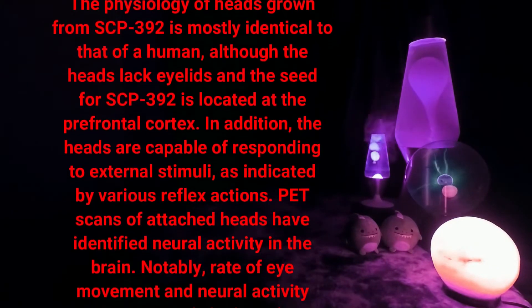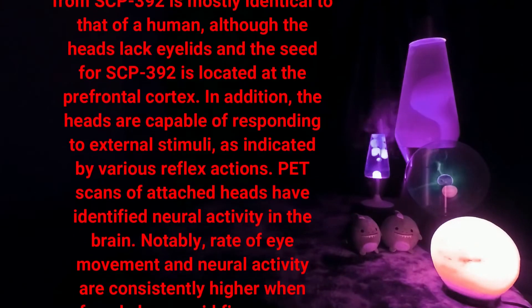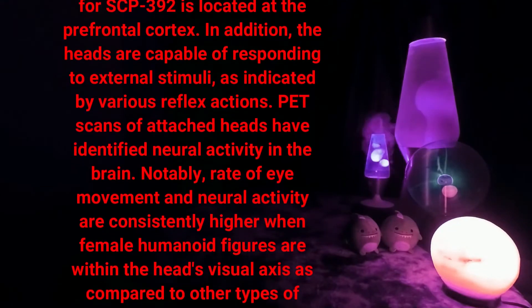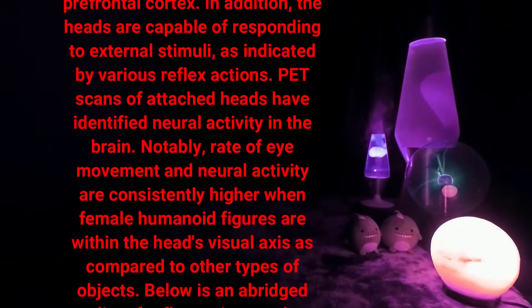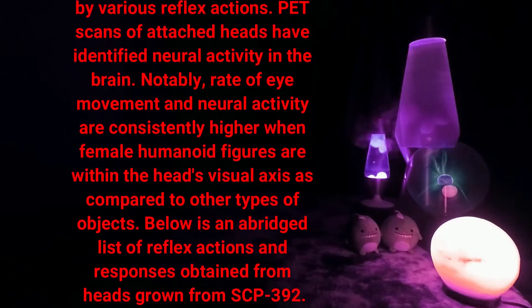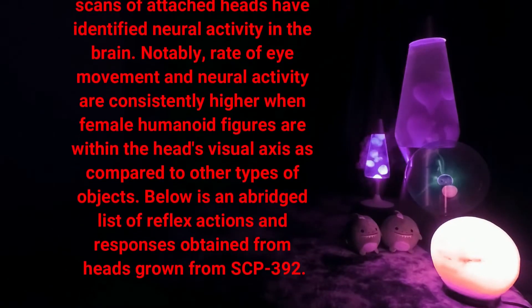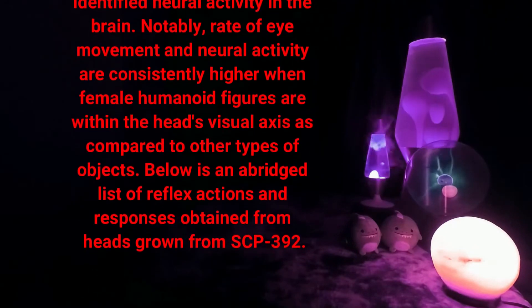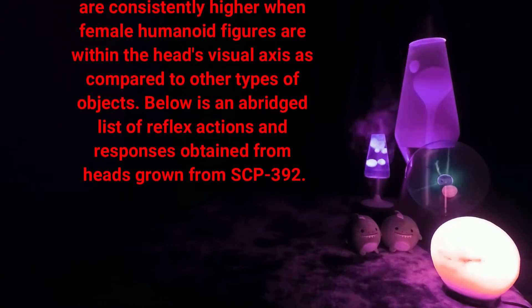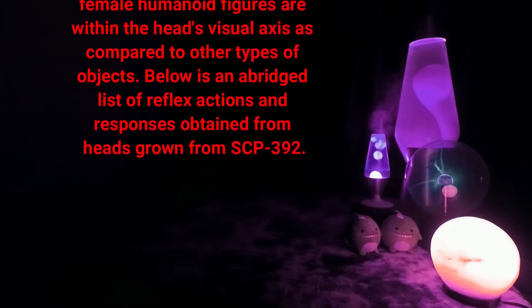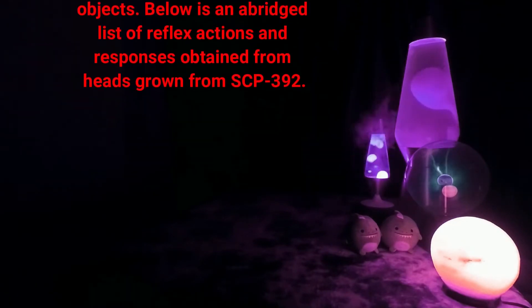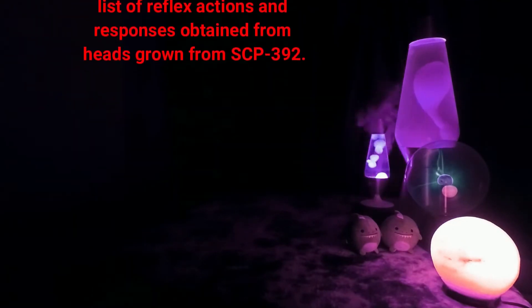The physiology of heads grown from SCP-392 is mostly identical to that of a human, although the heads lack eyelids and the seed for SCP-392 is located at the prefrontal cortex. The heads are capable of responding to external stimuli as indicated by various reflex actions. PET scans of attached heads have identified neural activity in the brain. Notably, rate of eye movement and neural activity are consistently higher when female humanoid figures are within the head's visual axis compared to other types of objects. Below is an abridged list of reflex actions and responses obtained from heads grown from SCP-392.